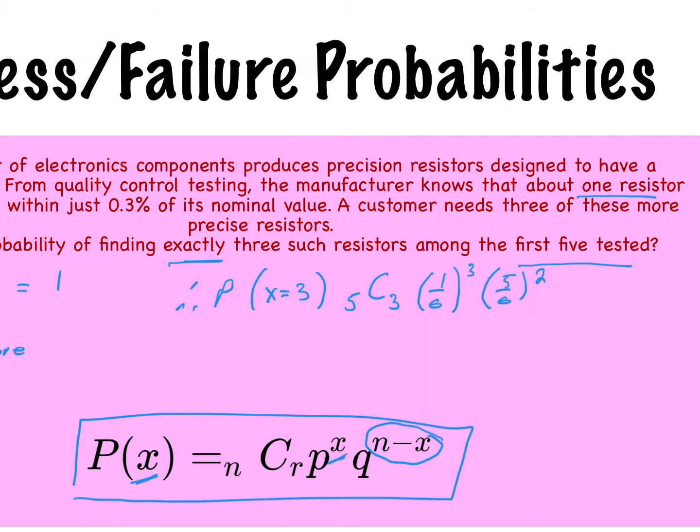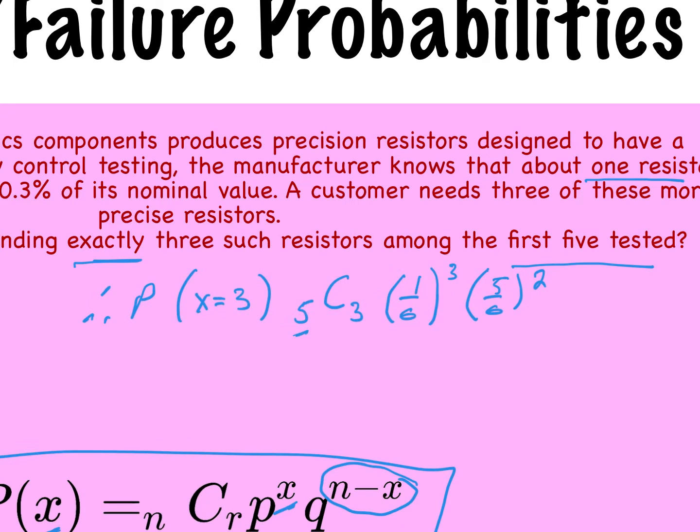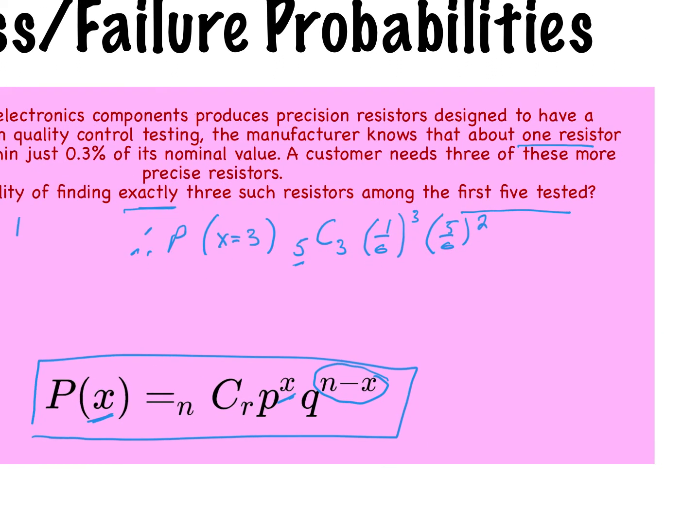Which means the probability now of failure would be five over six to the exponent two. Notice that the three and the two add up to five. And so when you do that calculation, you will get 0.0321.